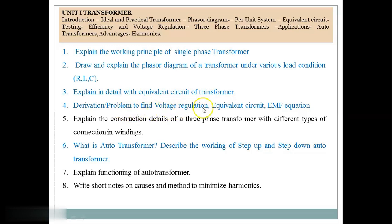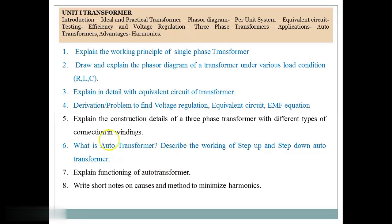Derive the voltage regulation and equivalent circuit EMF equation of a transformer. A problem may also be asked to find voltage regulation or EMF equation. Explain the construction details of a three phase transformer with different types of winding connections. The different types of connections are: Star to Star, Delta to Delta, Star to Delta, and Delta to Star — these are the 4 different types in three phase connection.